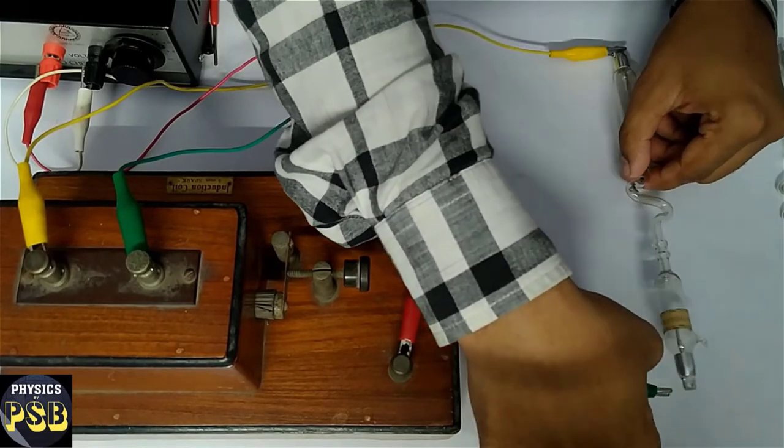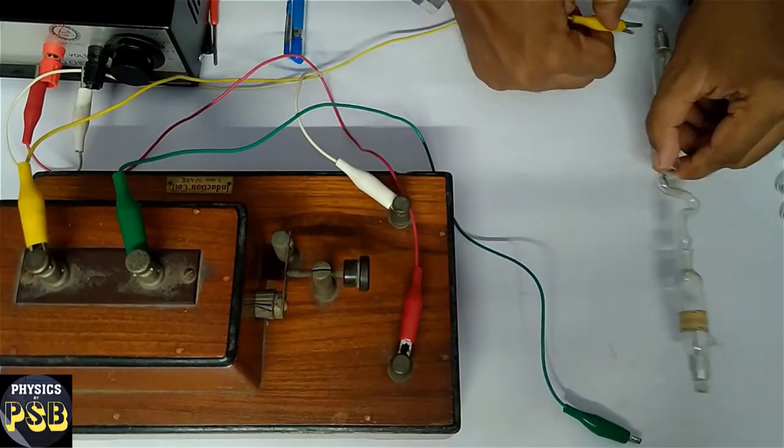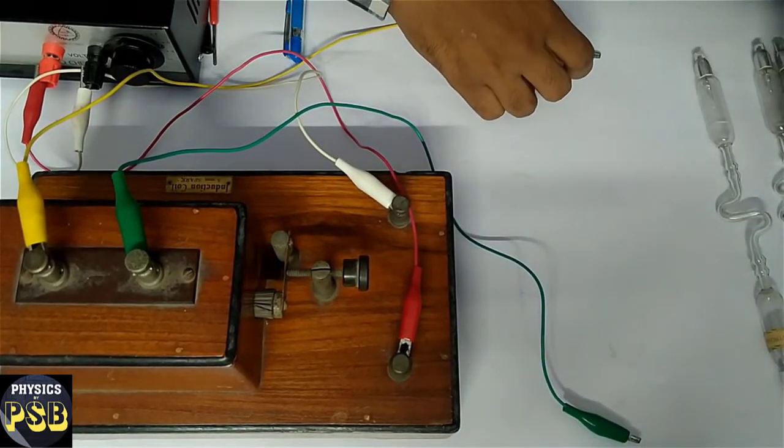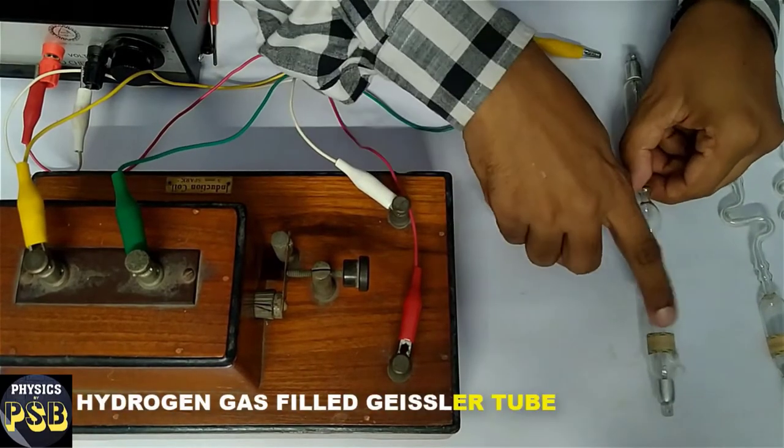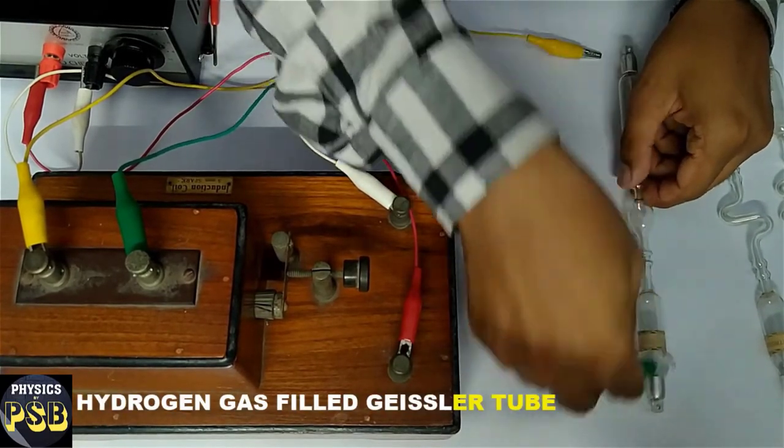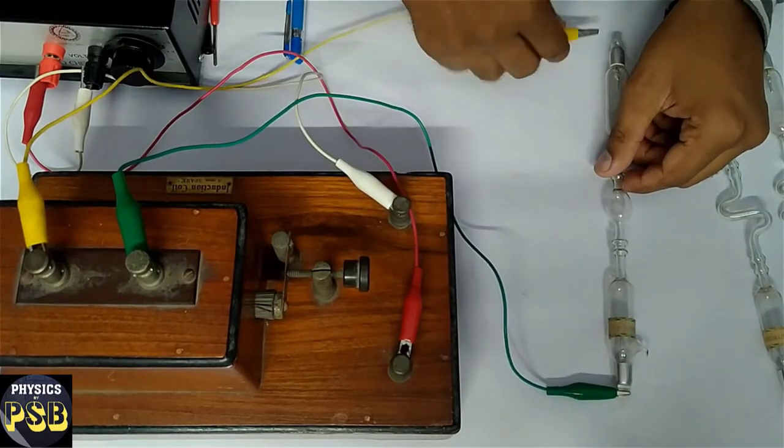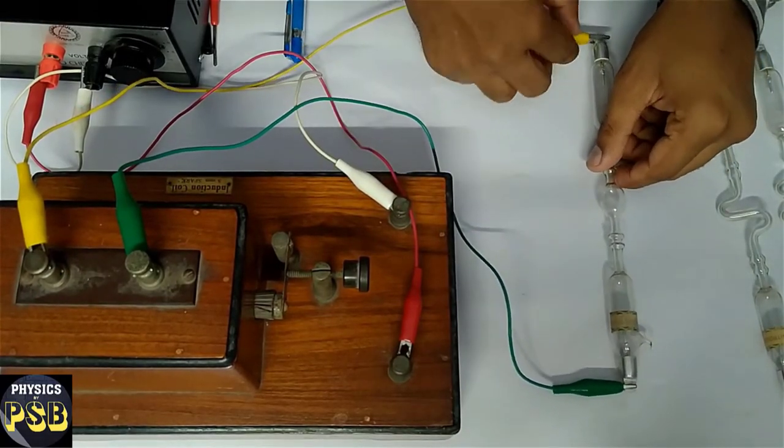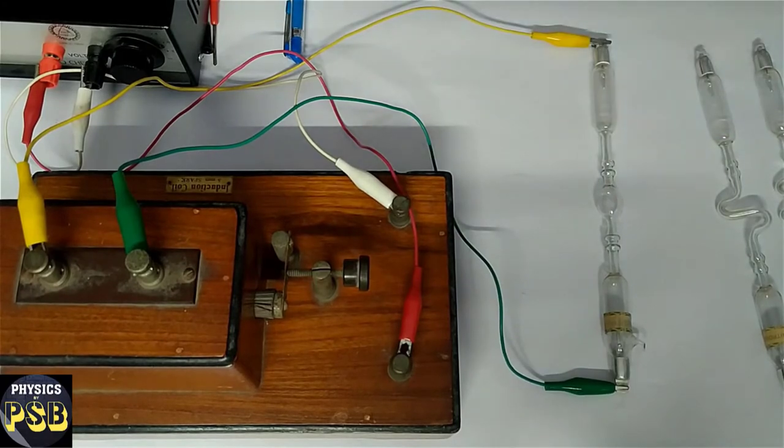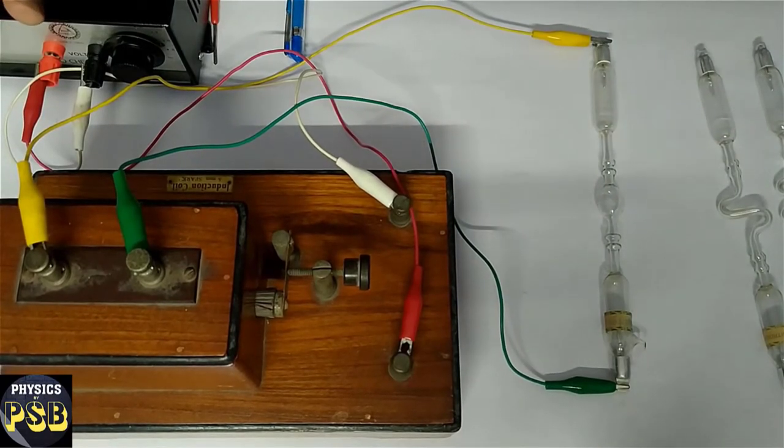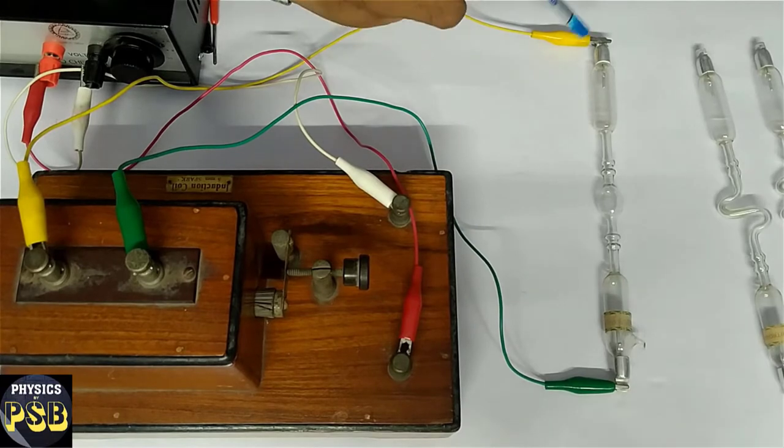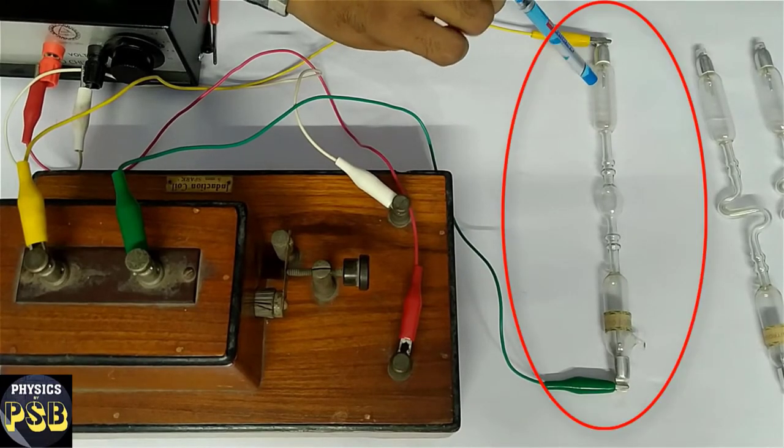Now I have replaced this with another tube filled with hydrogen gas. I will pass current through this and show you how the discharge occurs through hydrogen gas. The light emitted is very hard to see.